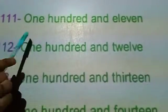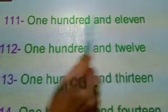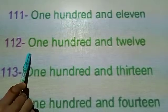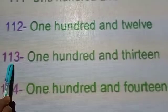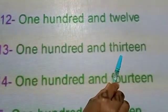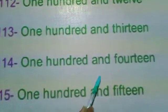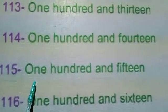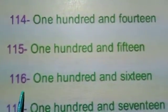Now next. One one one — one hundred and eleven. One one two — one hundred and twelve. One one three — one hundred and thirteen. One one four — one hundred and fourteen. One one five — one hundred and fifteen.